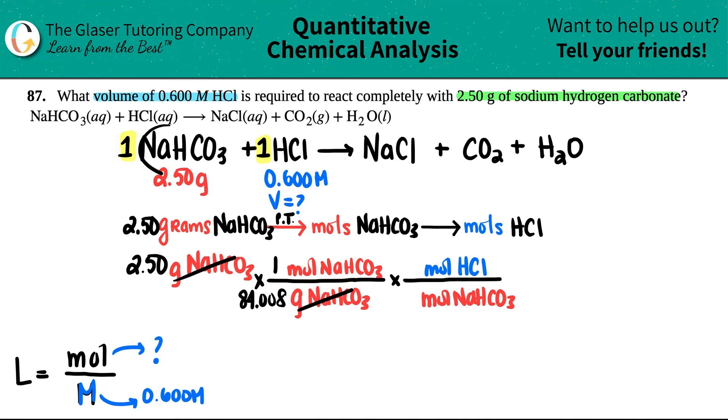For every one NaHCO3, I need one HCl. So one and one. Okay, now I have the moles of HCl. So let's just calculate. I literally just got to do 2.5 divided by 84.008. And I get 0.02976 moles of HCl.